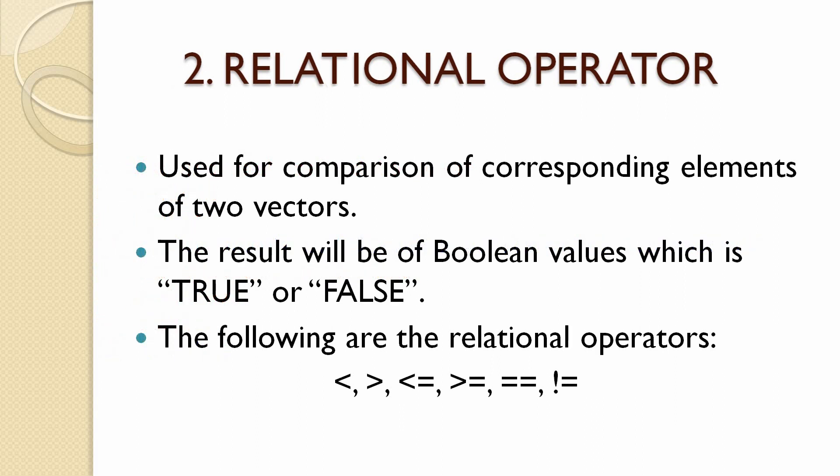The next type of operators are relational operators. They are used for comparison of corresponding elements of two vectors. Since we are comparing two values, the result will only be true or false. The relational operators supported by R are greater than, less than, greater than or equal to, less than or equal to, double equal to which checks whether two values are equal, and not equal to which checks whether two values are unequal.